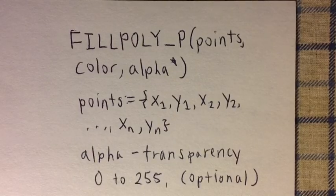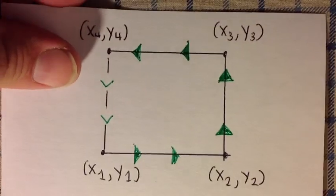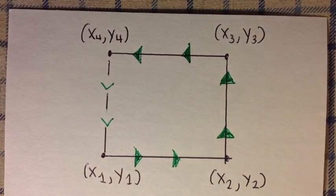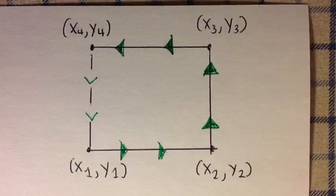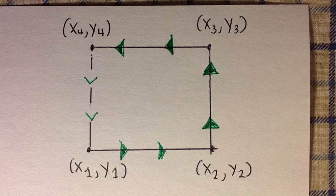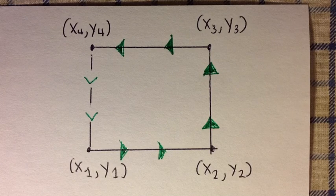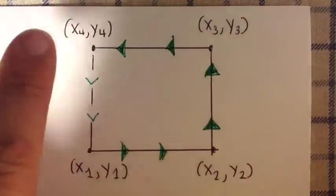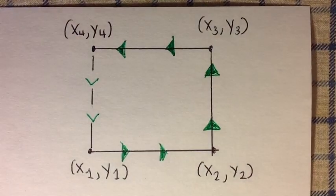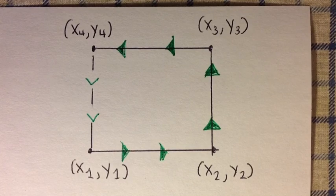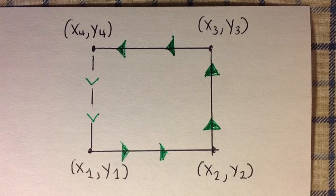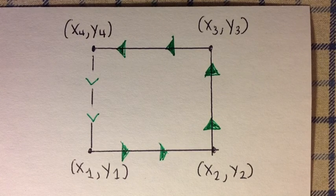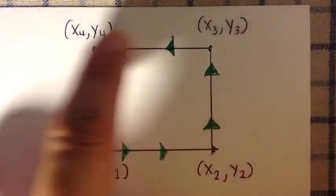The order that you list the arguments is important because you're following a path. Let's look at this square where I designated the four corners as points 1, 2, 3, and 4 respectively. If I follow the green arrows and type in the points as designated, you're going to get a nice looking square like this.